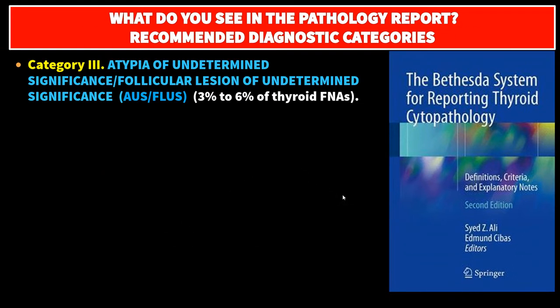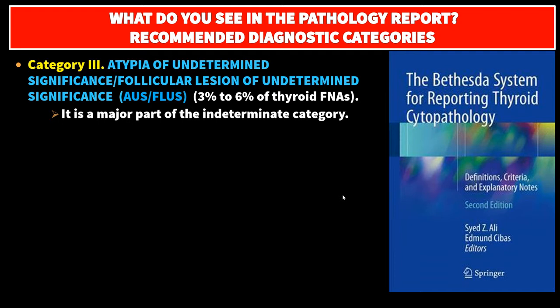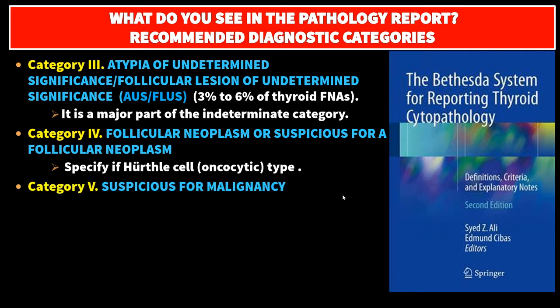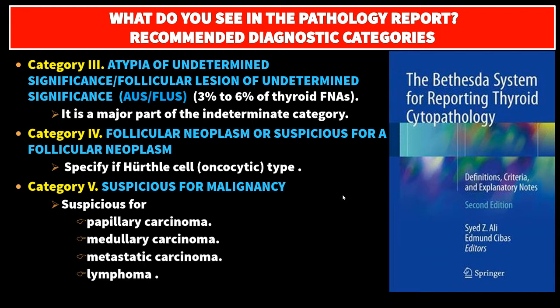Category 3: atypia of undetermined significance or follicular lesion of undetermined significance — it is a major part of the indeterminate category. Category 4: follicular neoplasm or suspicious for a follicular neoplasm — specify if Hürthle cell (oncocytic) type. Category 5: suspicious for malignancy, including suspicious for papillary carcinoma, medullary carcinoma, metastatic carcinoma, lymphoma, and other.